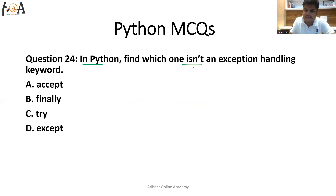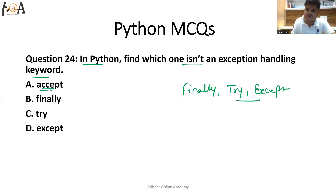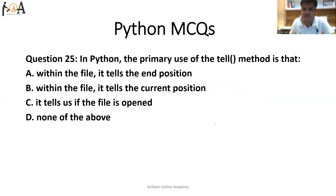Question 24: in Python, find which one is not an exception handling keyword. There are finally, try, and except — these are the famous keywords used in exception handling. But the question asks which one is not, so option A is the correct answer.